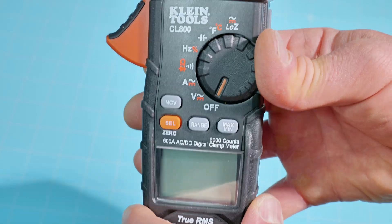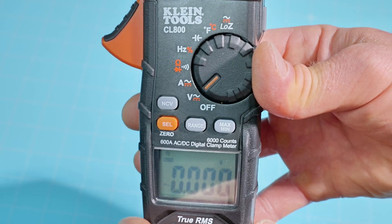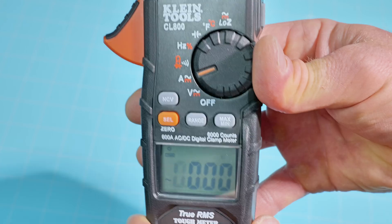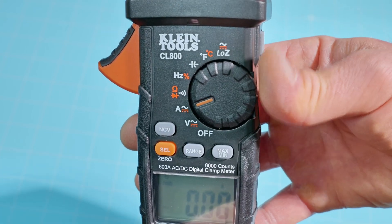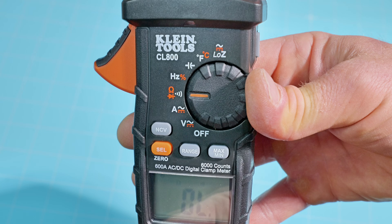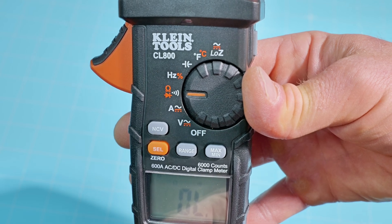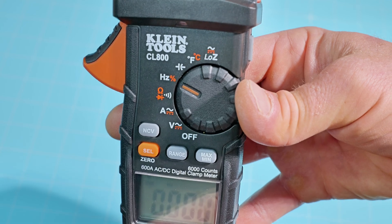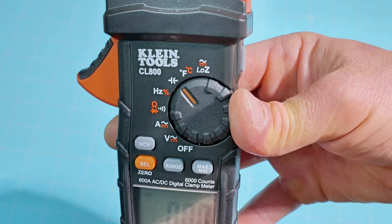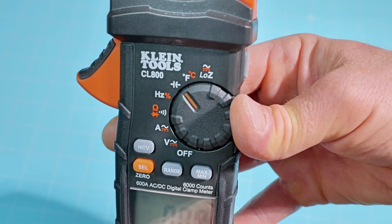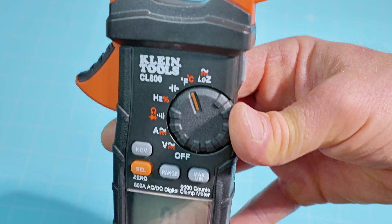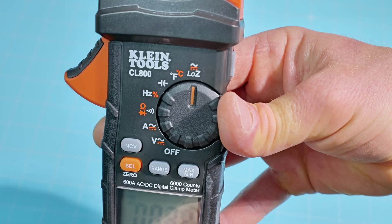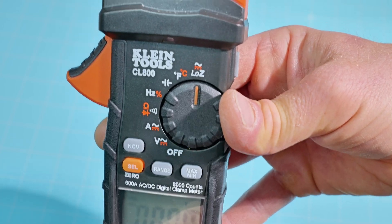Over to the dial, we have voltage AC and voltage DC if you use your shift button. One more click is amperage AC and amperage DC. We have our resistance slash diode feature. Another click brings us into the hertz and duty cycle functions. Another click brings us into capacitance. One more is our Fahrenheit and Celsius temperature readings. And finally, we have our low Z or low impedance feature.